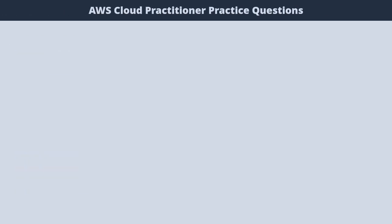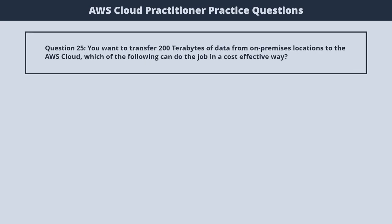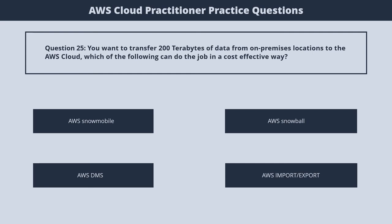Question 25. You want to transfer 200 terabytes of data from on-premises locations to the AWS cloud. Which of the following can do the job in a cost-effective way? 1. AWS Snowmobile. 2. AWS Snowball. 3. AWS DMS. 4. AWS Import/Export. The correct answer is 2. AWS Snowball.